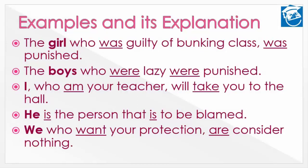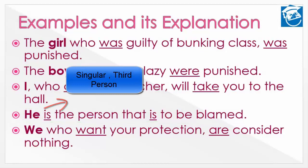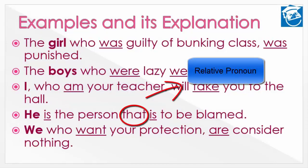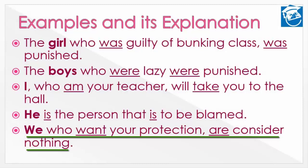'He is the person that is to be blamed.' यह वो व्यक्ति है जिस पर blame आना चाहिए। He singular है और third person है, तो accordingly 'is' लगा। अगर ज्यादा लोग होते तो 'are' लगता। यहाँ 'that' relative pronoun है — antecedent singular और third person है, इसलिए 'that' के बाद भी 'is' का उपयोग किया गया है।